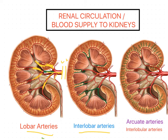Coming to the interlobar arteries: in between the pyramids, the lobar artery gives branches in between the lobes. Between two adjacent lobes, the lobar artery divides into two branches, which are called interlobar arteries, shown here in green.